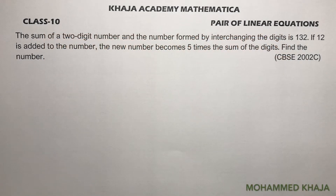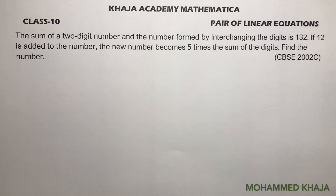The sum of a two-digit number and the number formed by interchanging the digits is 132. If 12 is added to the number, the new number becomes five times the sum of the digits.